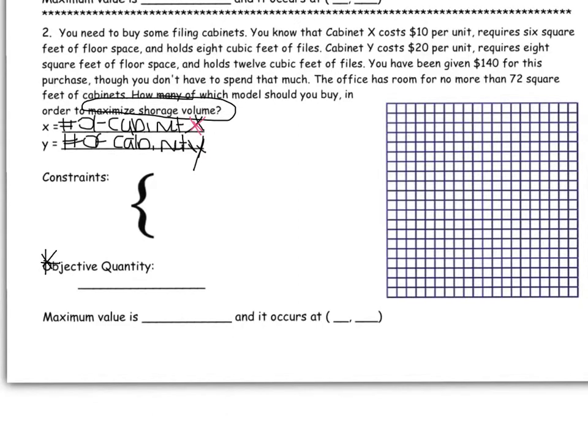To maximize storage space, you have to come up here and see that cabinet X holds 8 cubic feet. So the storage space, or we could have used V for volume. Cabinet X holds 8 cubic feet and cabinet Y holds 12 cubic feet.